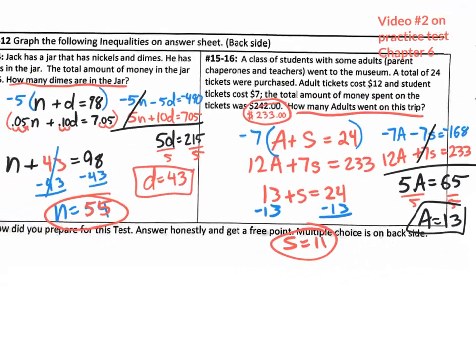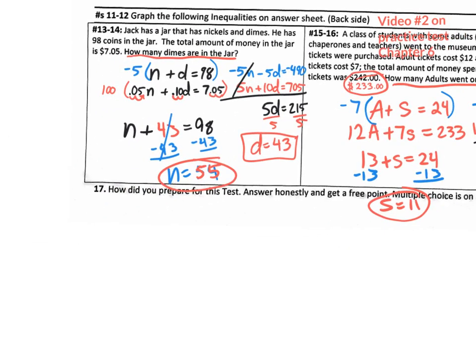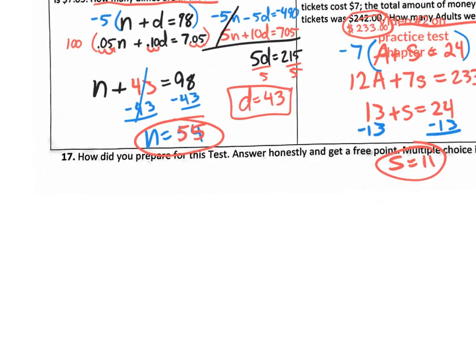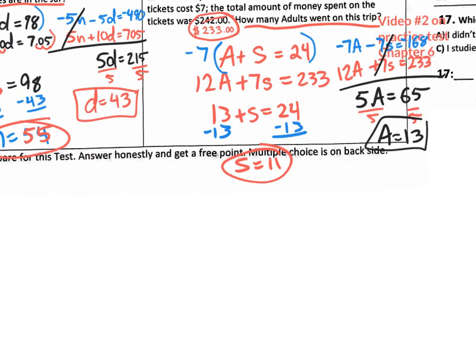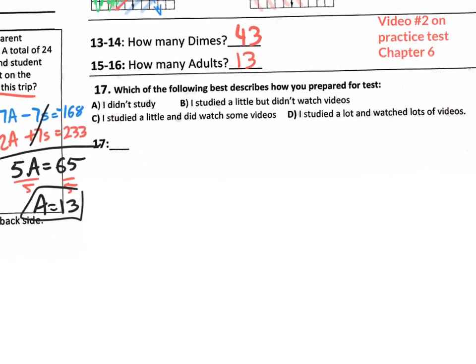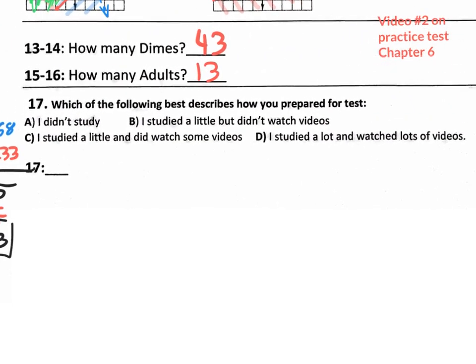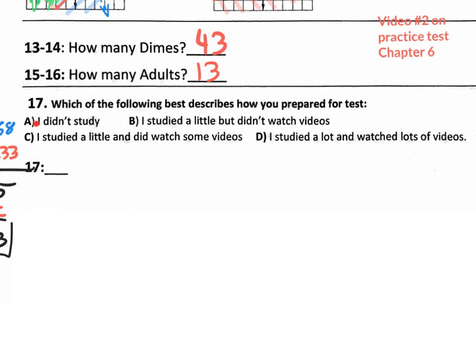That's it. But then again, on the test, I'm going to give you another free point. Just like on the other one. Number 17. How do you prepare for this test? Answer honestly. Get a free point. Multiple choices on the back side. And hopefully, you guys don't check A tomorrow. Hopefully, you don't do B either. Hopefully, you study a lot, and you watched lots of videos on YouTube or on Edmodo.